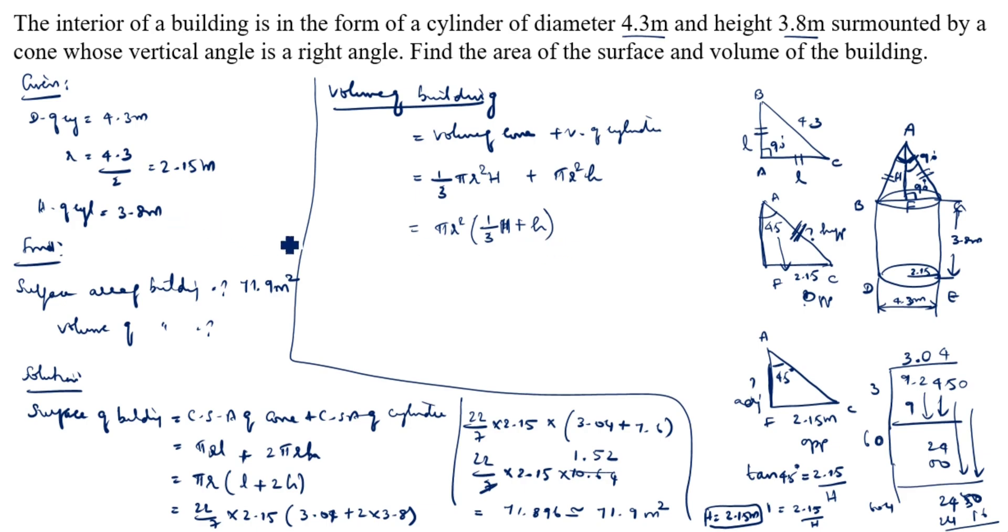This h value we know: 3.8 meter. What is pi value? Pi is 22 by 7 into r is 2.15 the whole square bracket of 1 by 3. What is h value? 2.15 plus small h is 3.8. 22 by 7 into 2.15 the whole square is 4.625 bracket of 2.15 plus 3.8 into 3 is 11.4 divided by 3. Equal to 22 into 4.625, add this into 13.55 divided by 7. Equal to 65.62 meter cube. 65.62 meter cube is the answer.